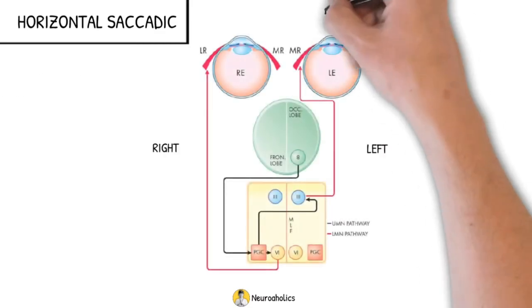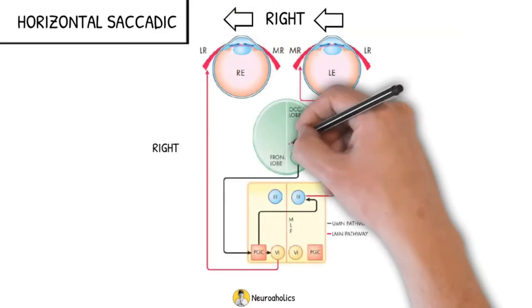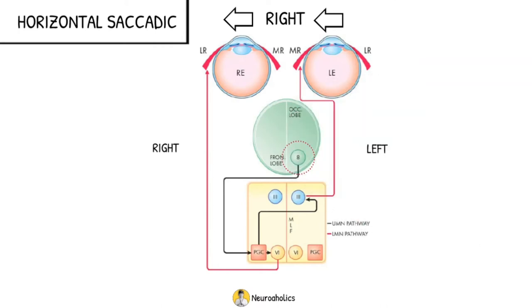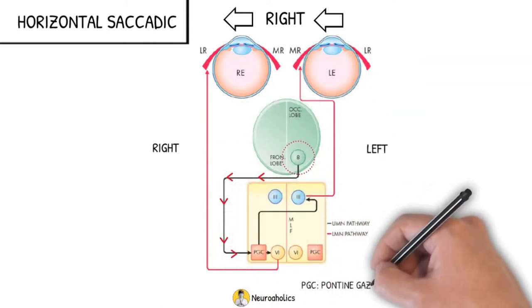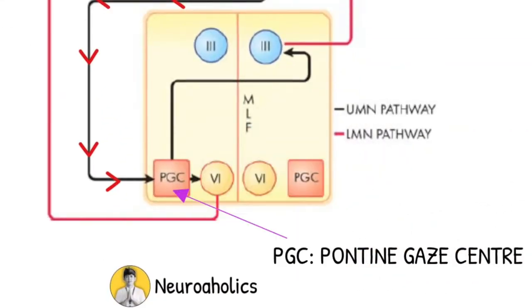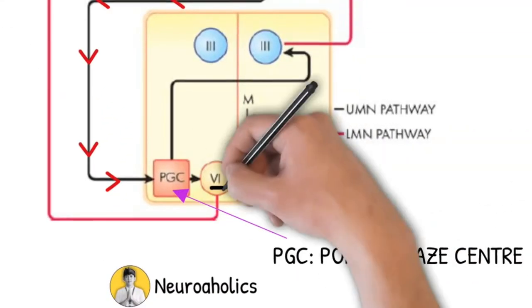If the eyes have to look to the right, then the command for this movement is given by the left frontal lobe in area 8 of the cortex. The nerves cross over to the opposite side and reach the right pontine gaze center. From here the nerves pass to the same side, in this case the right 6th nerve nuclei.